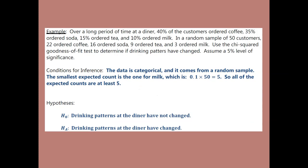In this example, the first sentence gives the model: 40%, 35%, 15%, 10% — that's the model we're working with. Then we have the sample data in the next sentence, and we want to determine if drinking patterns have changed. The conditions for inference: we do have categorical data, it says it comes from a random sample. To check the expected cell counts, you just need to check the smallest one, which is milk at 10%. Ten percent of 50 is 5 — that's at least 5, so all expected counts are large enough.